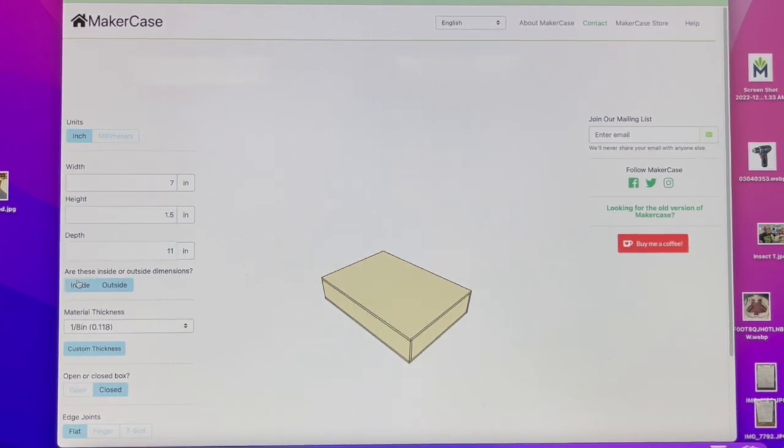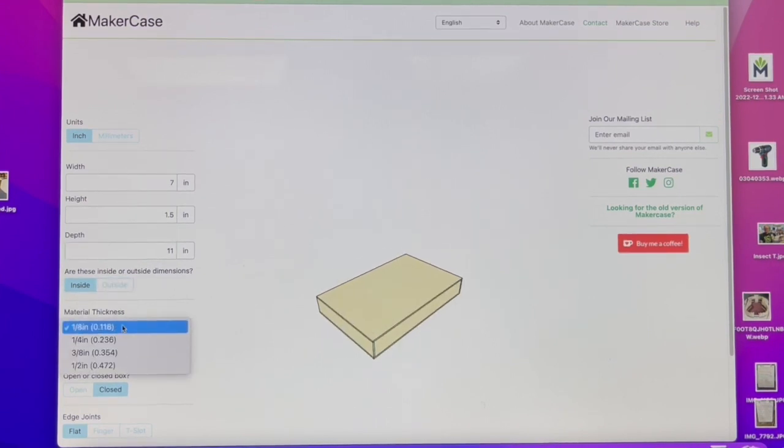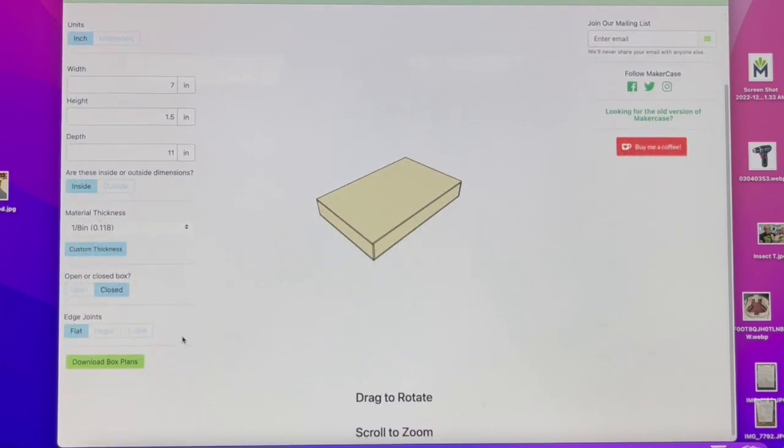The reason for these dimensions is that I could fit the whole box on a single sheet of 12x24 Baltic Birch. I also used the finger joints option.